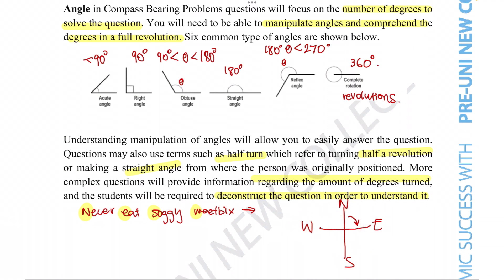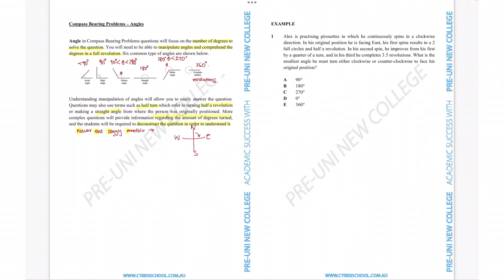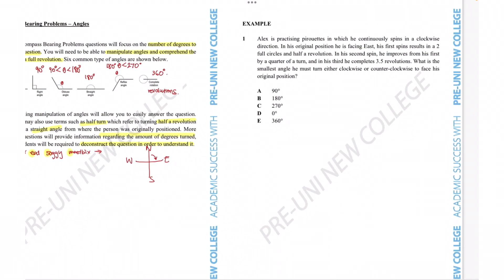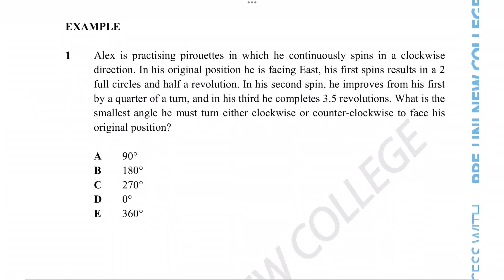The other most important thing that needs to be mentioned is how important it is to draw out a diagram for these types of questions. Being able to physically see what direction we're working with is going to be much easier when we complete questions, and also reduces the chance that we make mistakes because it allows us to visually see what's going on. Without further ado, let's try out this example question.